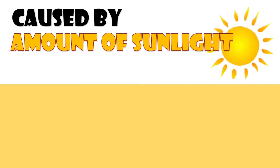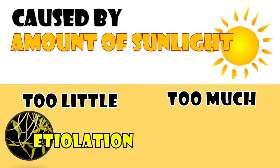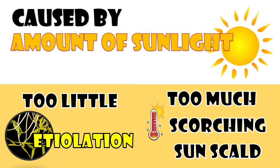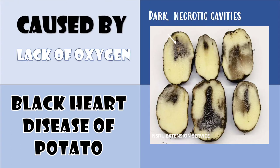Amount of sunlight: Too little sunlight causes etiolation in plants. Etiolated plants are tall with yellow leaves, while too much sunlight leads to scorching and sun-scalding along with high temperature. Black heart disease of potato is a physiological disorder caused by lack of oxygen, leading to dark necrotic cavities. This is common in waterlogged soils and poorly aerated storage areas, especially during periods of high temperature.